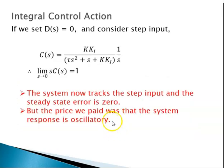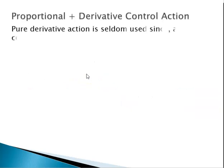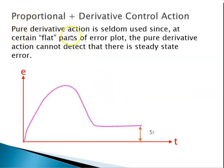Next, when disturbance is zero and we give a step input, the steady-state value of the output — using the final value theorem — equals one. So the system now tracks the step input; there is no steady-state error. But the price we paid is that the system became oscillatory. By introducing integral action, the system may become oscillatory, but it eliminates the steady-state error.